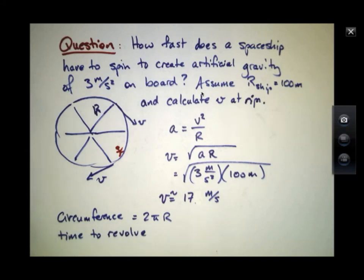The time to revolve around once will equal this circumference divided by the velocity. So this is 2 times pi, approximately 6, times that 100 meter radius. That would be 600 meters divided by 17.